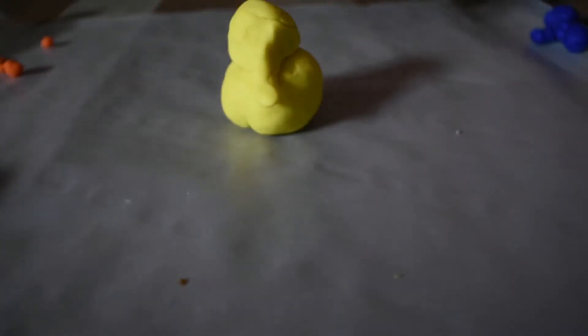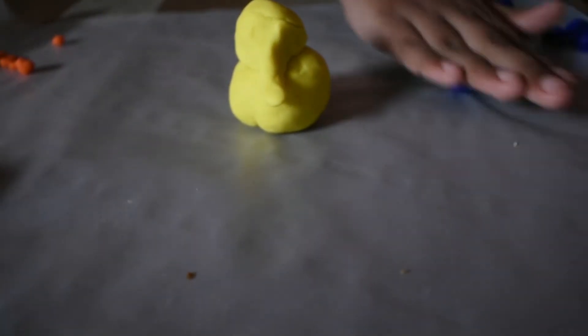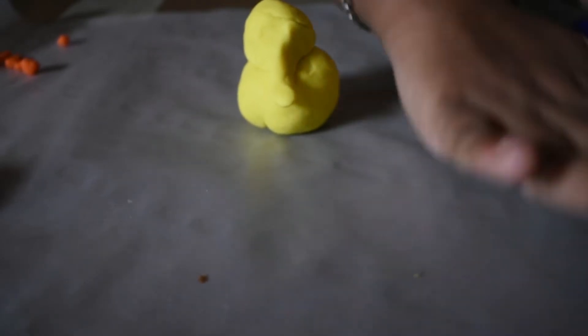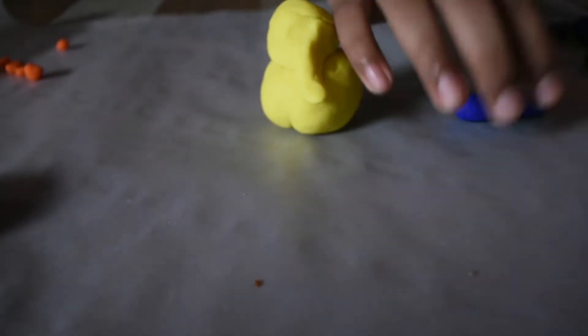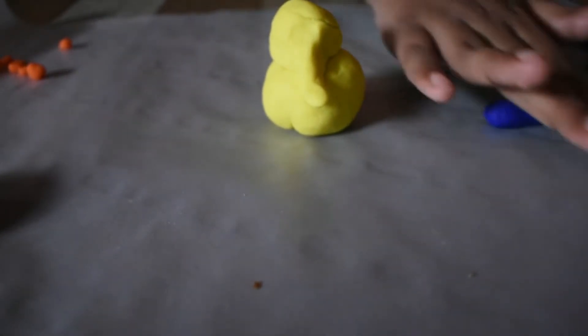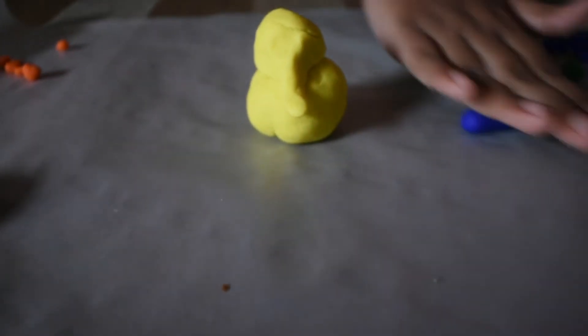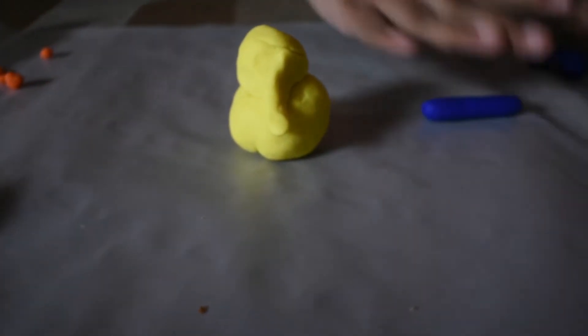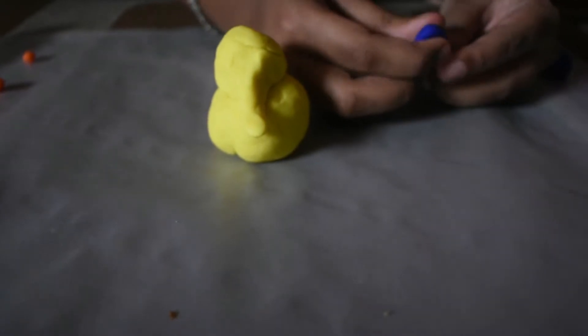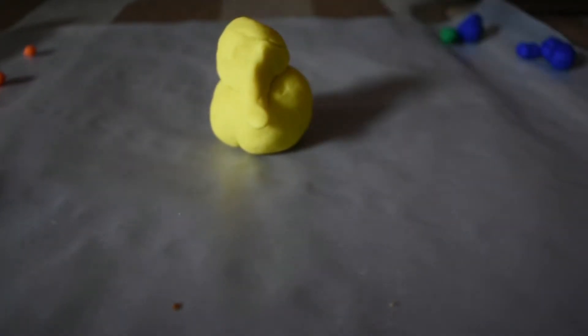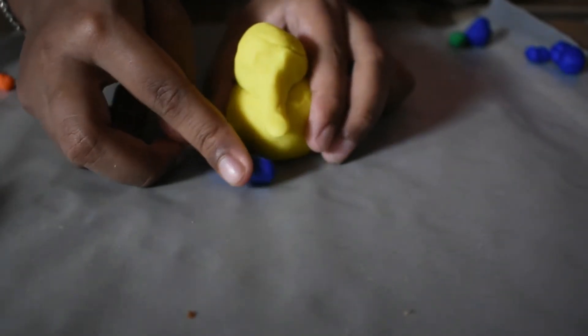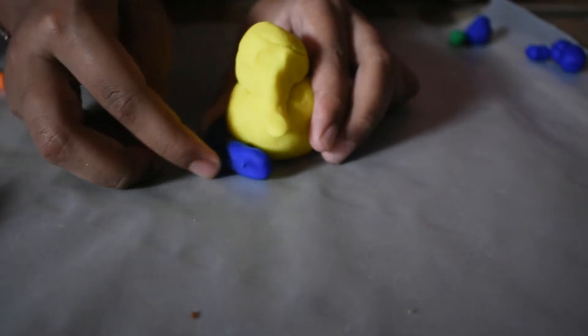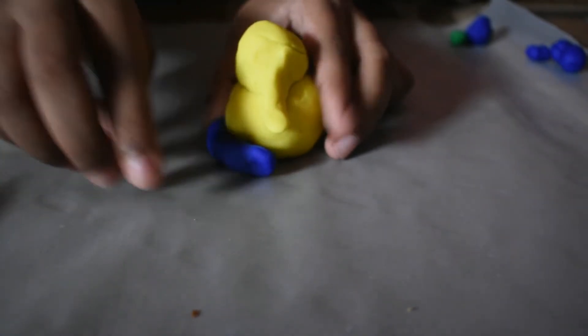Now I am going to do the legs. For this, take a small ball and roll it until it becomes like a big leg. Now press it at the edge. Stick it at the side of the Ganesha. Stick it like this.